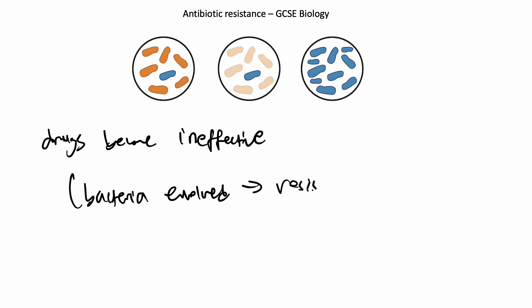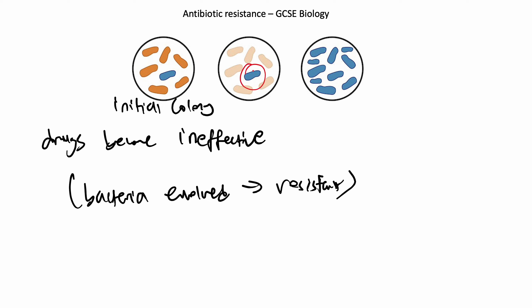So how exactly does this work? You're going to have your initial colony of bacteria in your body. You want to get rid of this harmful bacteria, so you insert some drugs that are going to wipe out all of these other bacteria except this one specific one - this one has a random mutation. Watch my video on mutations if you don't know what mutations are.